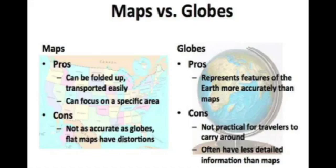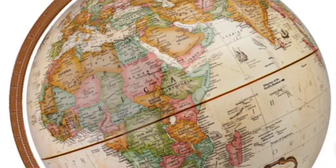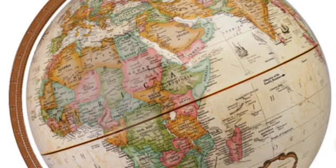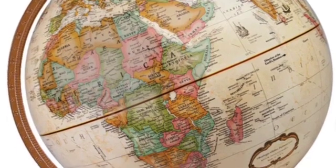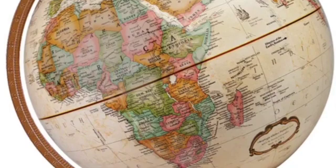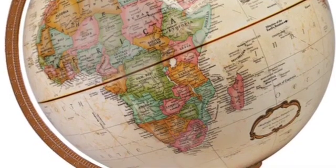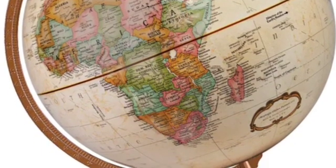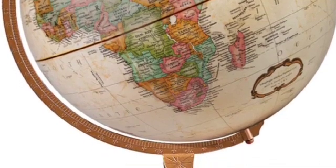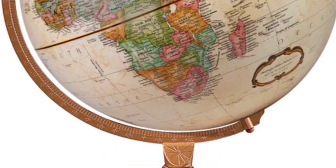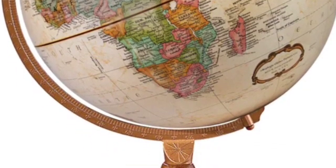Geographers use both of them to picture the world and show where things are located. A globe is the most accurate way to show places on Earth, because Earth is in the shape of a sphere, and globes are also in the shape of a sphere. Globes have some advantages over maps — they show the correct shapes of lands and bodies of water, and show accurate distances and directions between places on Earth.